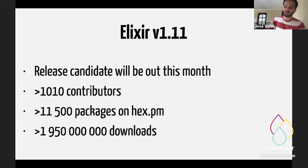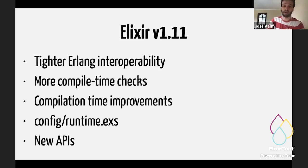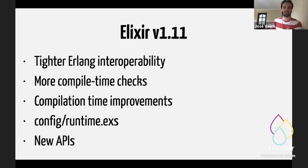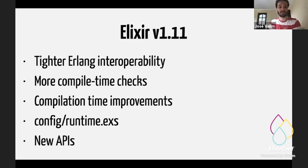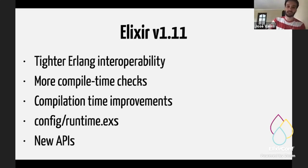So what are we going to talk about today? There are some topics I want to cover from Elixir 1.11. This is not a complete list — it's more like the most exciting things, in my opinion, coming in the next release. We're going to talk about Erlang Interop, compile time checks, compilation time improvements, config runtime, and some of the new APIs. So let's get started.